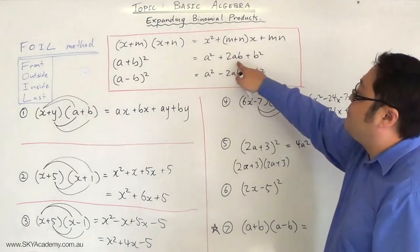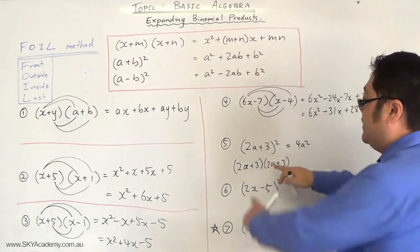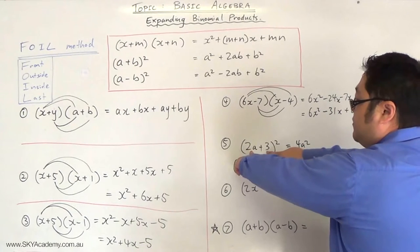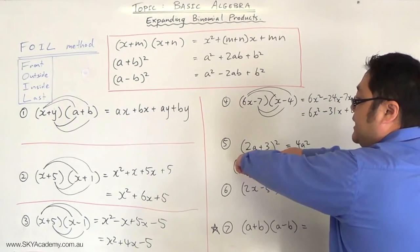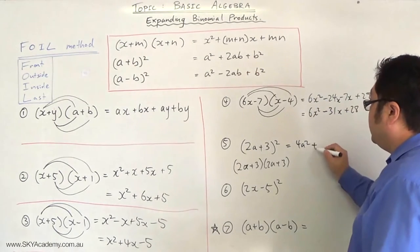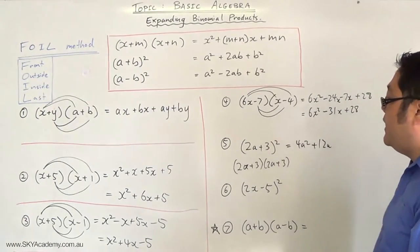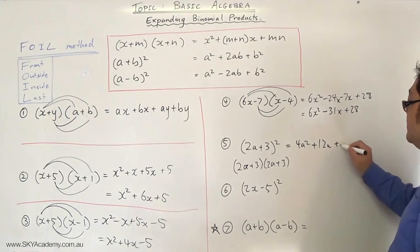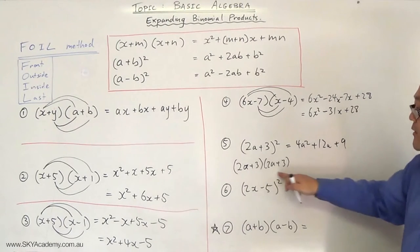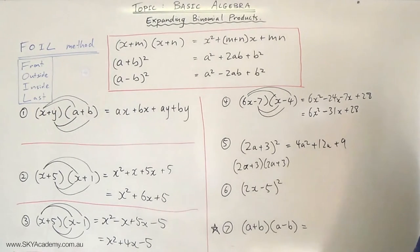And then it's twice the product of the middle two terms. So 2a times 3 is 6a. Double it becomes plus 12a. And then it becomes the last term squared. 3 squared becomes 9. And if you did it the FOIL method, you will find that you get exactly the same answer.